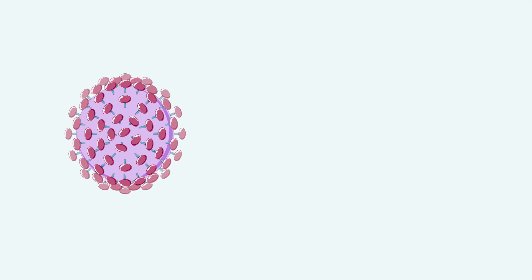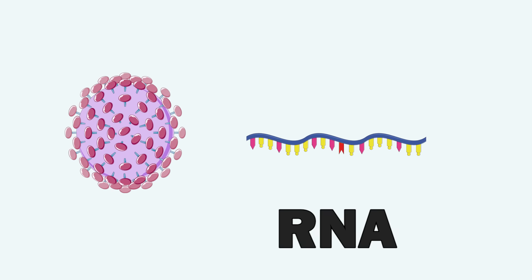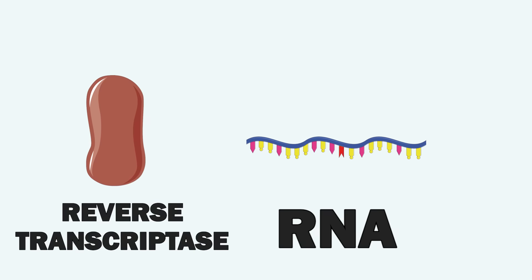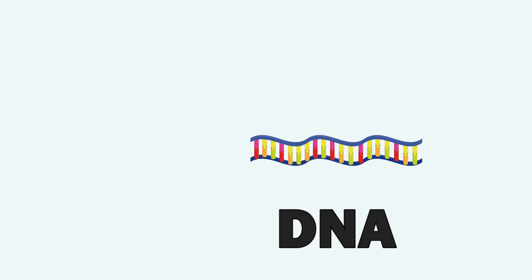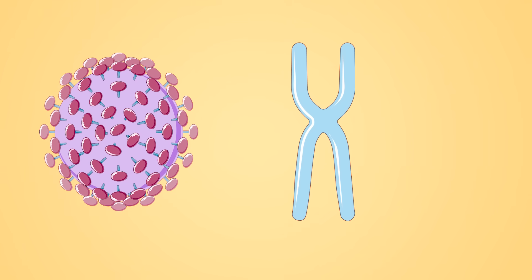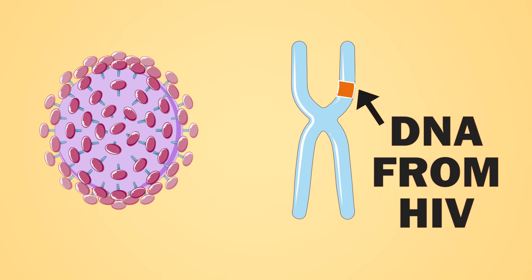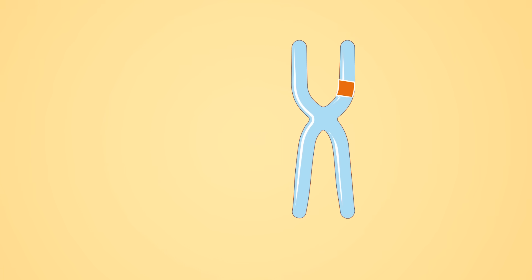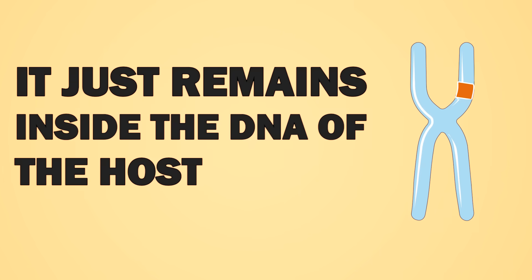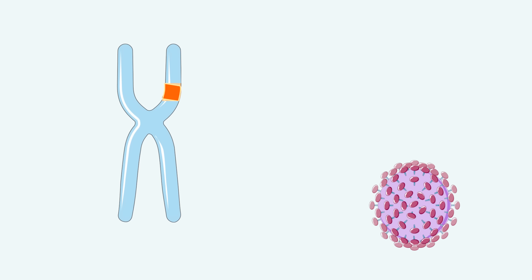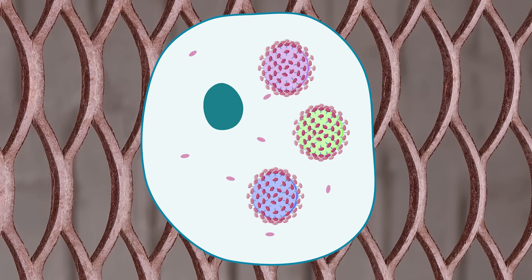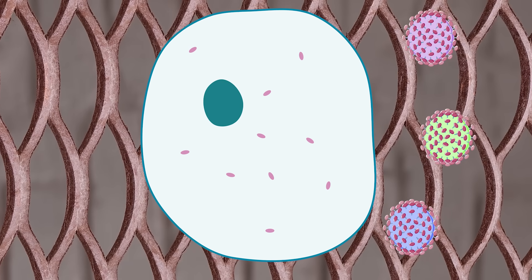It takes years and often decades until the immune system is destroyed and AIDS fully develops. Once a cell has been infected, HIV releases its genetic information in the form of RNA, then uses a protein called reverse transcriptase to convert its RNA into DNA. The goal is to incorporate this DNA into the host cell so that it can hide there. The virus often doesn't do much for a very long time — it just remains inside the host's DNA. Slowly, however, HIV activates itself, makes new viral particles, and the host cell finally bursts, releasing HIV particles that infect new cells.